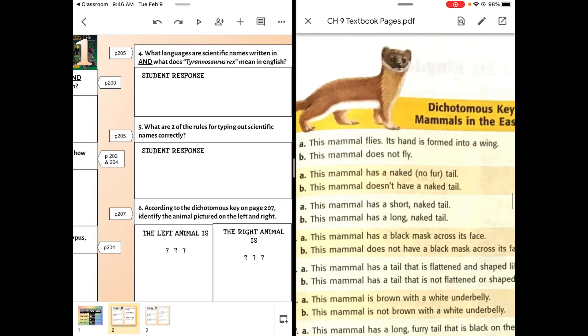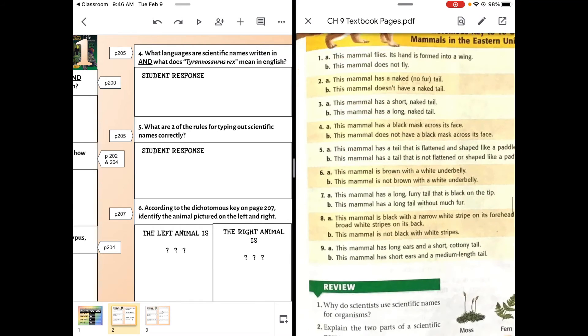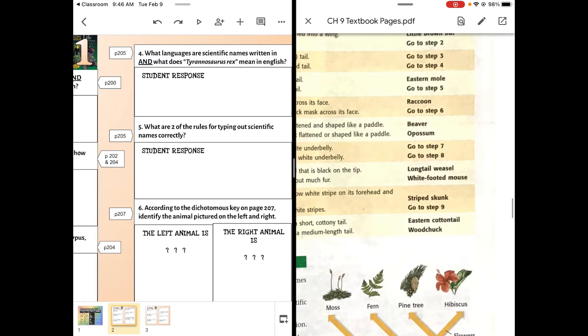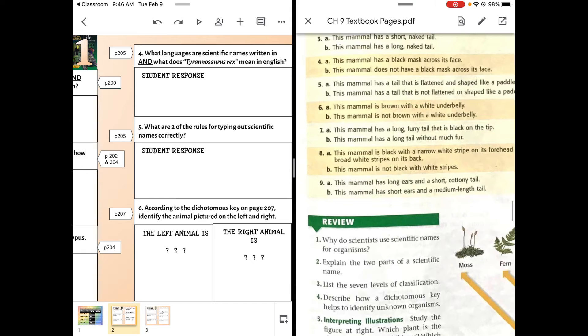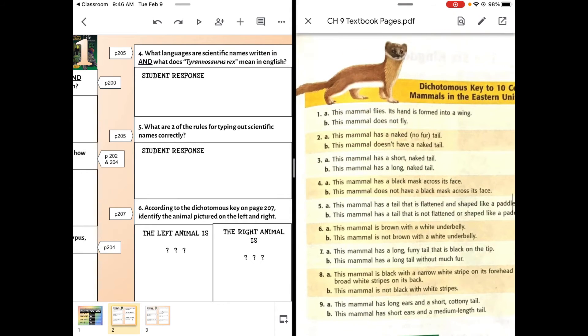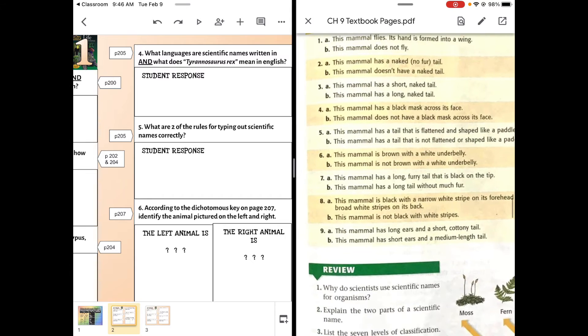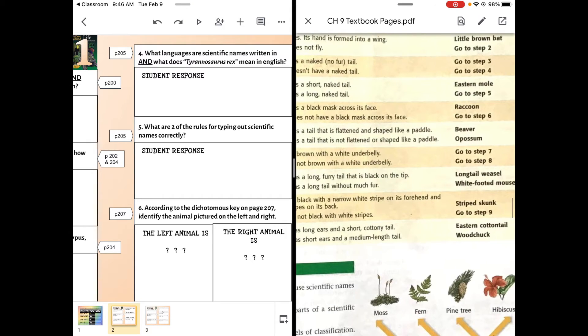Step six: this mammal is brown with a white underbelly and the colors are a little tricky, but yes, brown with a white underbelly. So did we find out what it was? No, step seven.